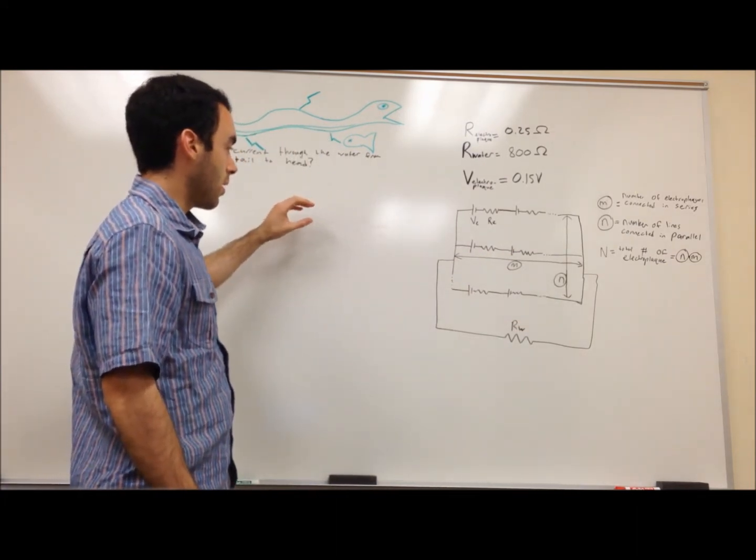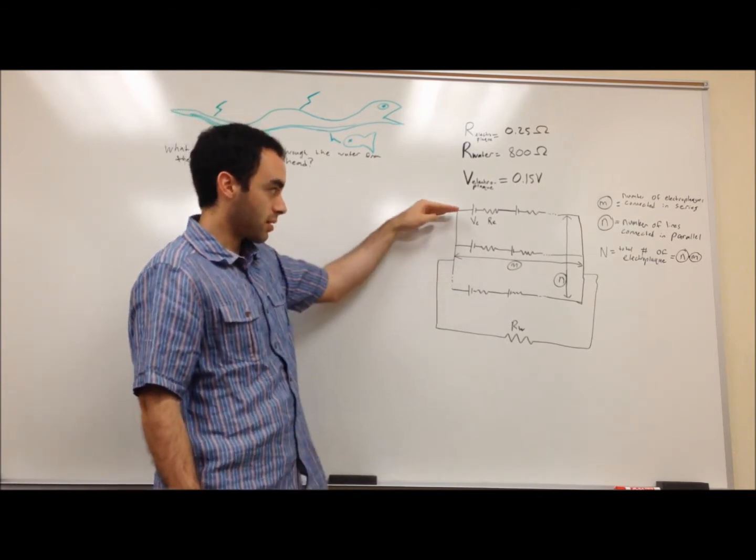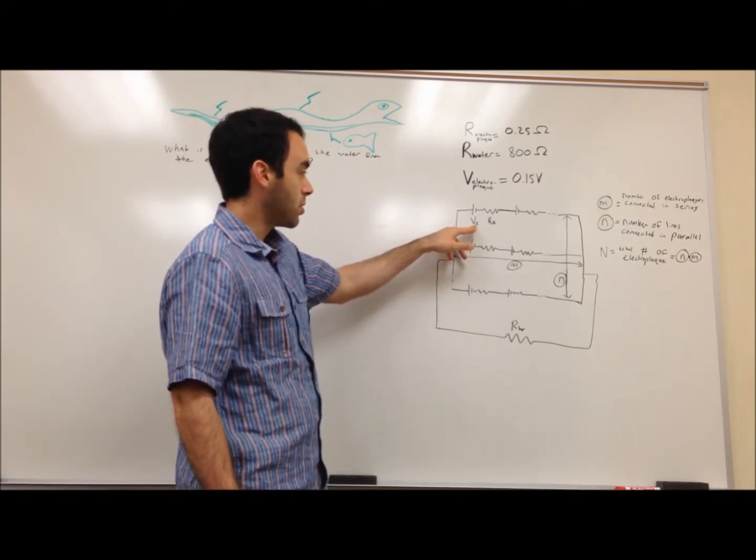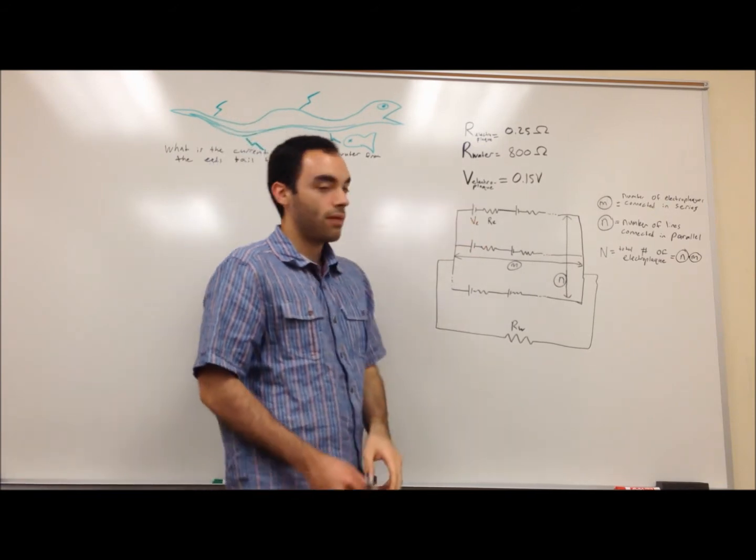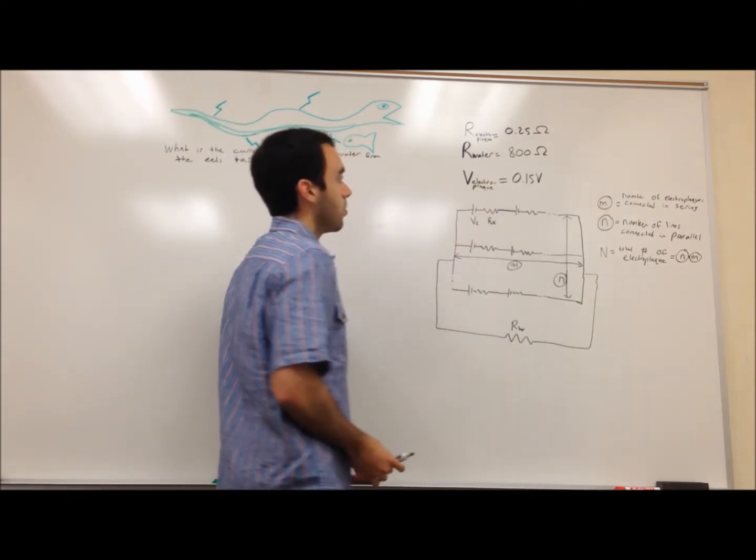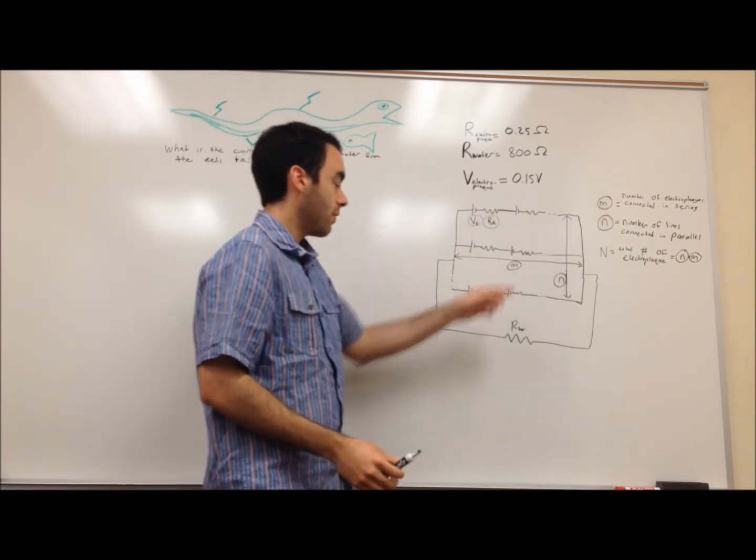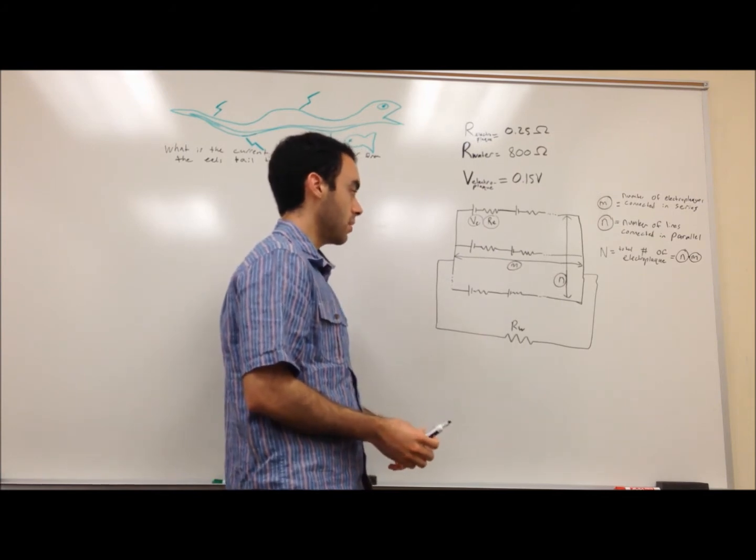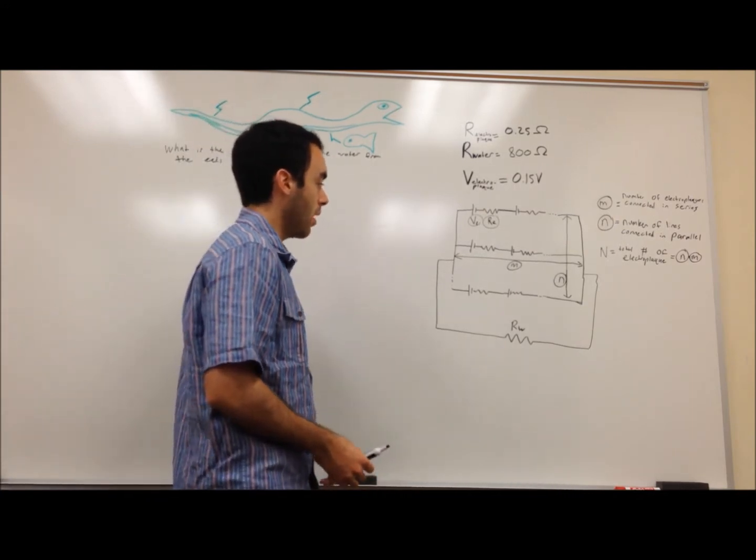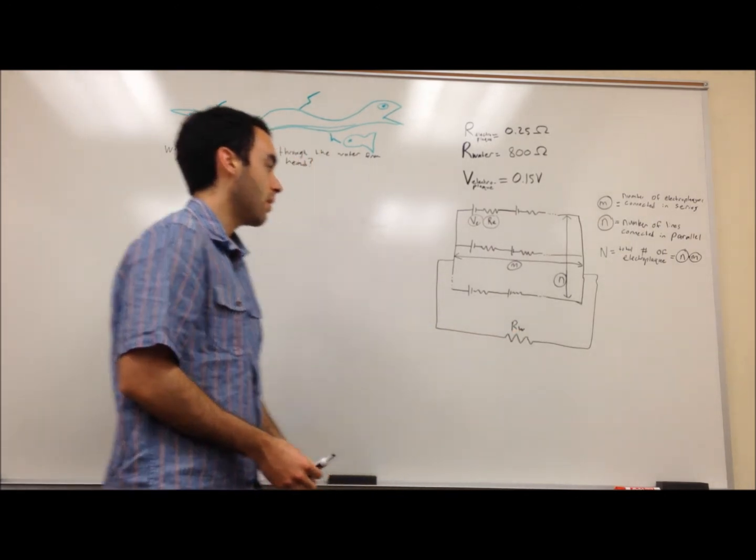And we're also going to have these lines of electroplaques which are stacked on other lines of electroplaques which can be modeled as electroplaques in parallel. So we have a circuit over here and we can see we have the voltage produced by each electroplaque which is roughly 0.15 volts. We have the resistance of each electroplaque which is roughly 0.25 ohms. We wrote the variables m for the number of electroplaques in series and we have the variable n for the number of lines of electroplaques in parallel to each other. And the whole system has to be in parallel with the water and we're going to calculate the current that goes through this.